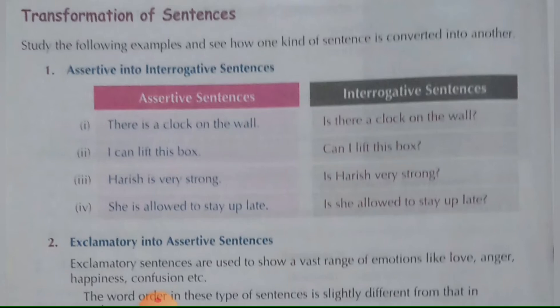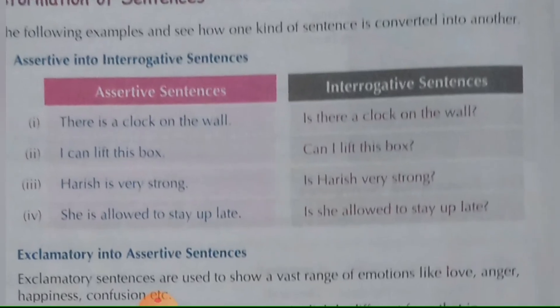First, let's look at assertive sentences changed into interrogative sentences. We start the sentence with a to-be verb. For example: 'There is a clock on the wall' becomes 'Is there a clock on the wall?' And 'I can lift this box' becomes 'Can I lift this box?' — and then we put a question mark.